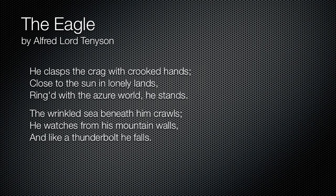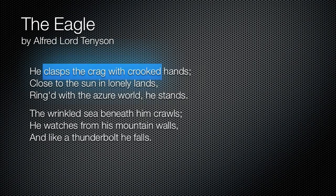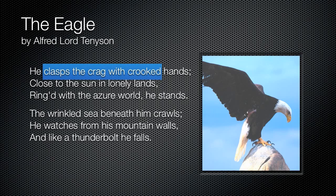We begin by looking at the sound of words and how sounds convey meaning. "He clasps the crag with crooked hands" — that tough, hard sound gives the impression of a very rugged animal. We're not dealing with an animal that is floating or soaring through the air. We're dealing with an eagle clenching onto the mountaintop. A very effective way to use sound, especially onomatopoeia, to your advantage.